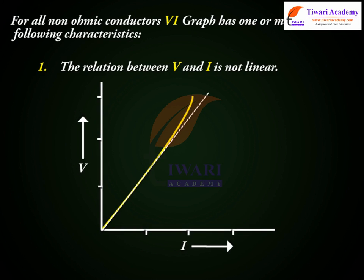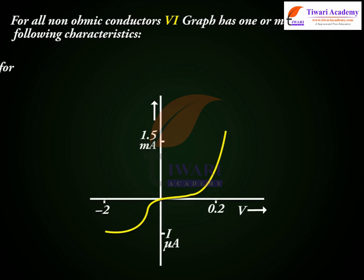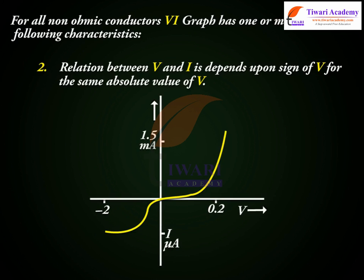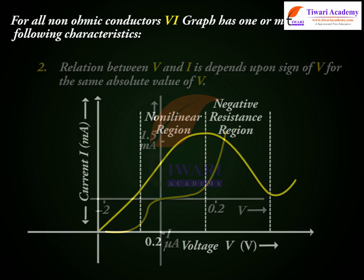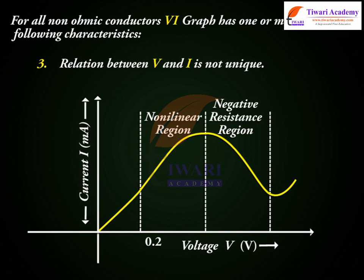1. The relation between V and I is not linear. 2. The relation between V and I depends upon the sign of V for the same absolute value of V. 3. The relation between V and I is not unique.